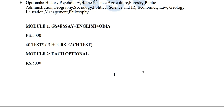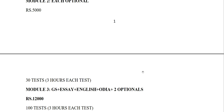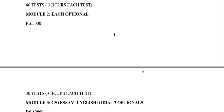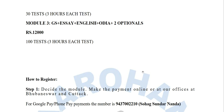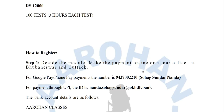Now coming to the modules. The first module is the General Studies module — General Studies plus Essay plus Compulsory English and Compulsory Odia — which is 5,000 rupees total, with 40 full-length three-hour tests. For each optional, there are 30 tests, including chapter-wise and full-syllabus tests, all three hours. Those who want the entire package — two optionals plus GS, Essay, English, and Odia — get 100 tests at a course fee of 12,000 rupees.